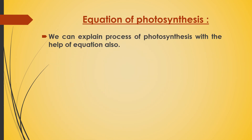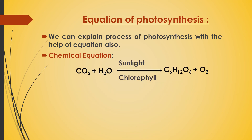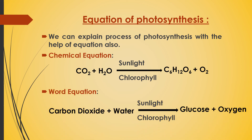We can explain the process of photosynthesis with the help of equations. The chemical equation is: CO₂ + H₂O → C₆H₁₂O₆ + O₂ (in the presence of sunlight and chlorophyll). The word equation is: carbon dioxide + water → glucose + oxygen (in the presence of sunlight and chlorophyll).